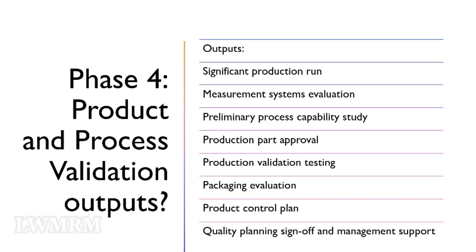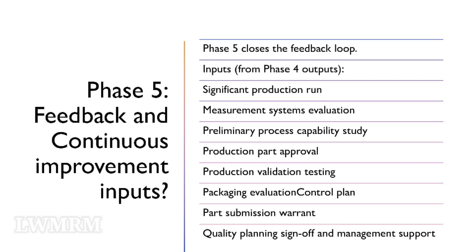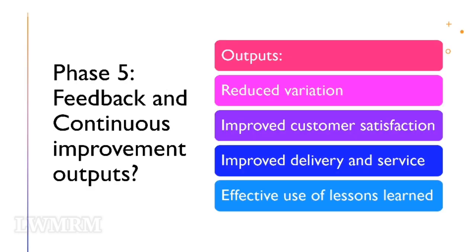Phase 4 outputs: significant production run; measurement systems evaluation; preliminary process capability study; production part approval; production validation testing; packaging evaluation; product control plan; and quality planning sign-off and management support. Phase 5 — Feedback and Continuous Improvement — closes the feedback loop. Phase 5 inputs are from Phase 4 outputs: significant production run; measurement systems evaluation; preliminary process capability study; production part approval; production validation testing; packaging evaluation; control plan; part submission warrant; and quality planning sign-off and management support. Phase 5 outputs: reduced variation; improved customer satisfaction; improved delivery and service; and effective use of lessons learned.